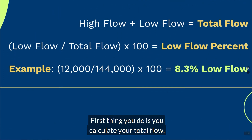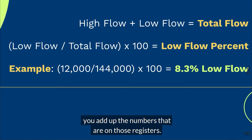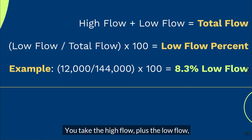First thing you do is you calculate your total flow. You take the two different registers, you add up the numbers that are on those registers. You take the high flow plus the low flow — that gives you your total flow. Very easy.